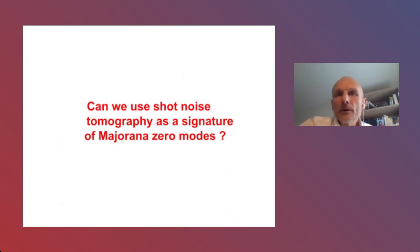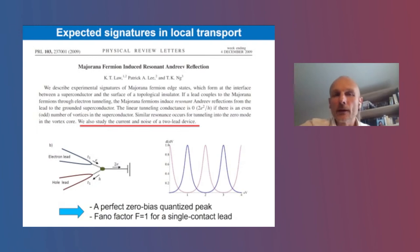In the next few minutes, I would like to push this idea a bit forward and to see whether we can use this shot noise tomography as a signature of Majorana bound states. I don't need to introduce further the Majorana bound states. It was already mentioned a few talks, especially yesterday. In earlier theory papers, people look at the current and the noise in a tunnel device with Majorana bound states. What is the prediction? Concerning current, if you try to probe this Majorana bound state, you do expect a perfect zero-bias peak, so a conductance 2e squared over h. But also, you do expect a Fano factor equal to one.